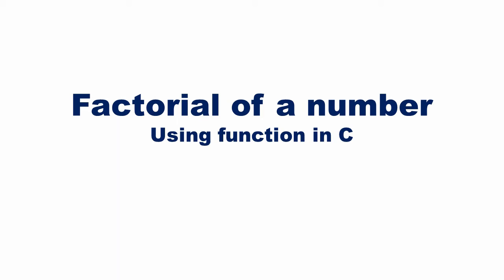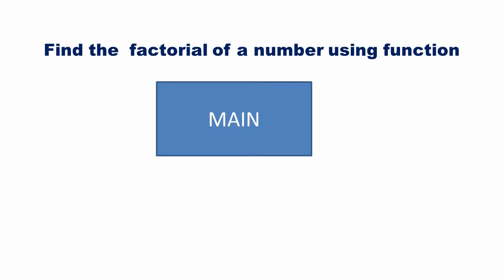In this video, let us discuss how to write a C program to find the factorial of a number using function. Our solution has two functions: one is the main and the second one is a function to find the factorial of the number.